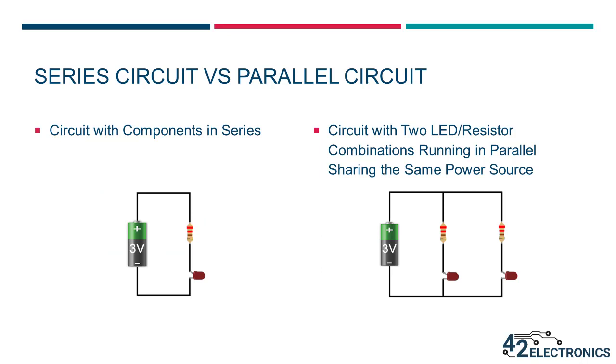But most projects or real-life applications, like that remote control, would run in what's known as a parallel circuit. When running in parallel, the current runs from the positive terminal of the battery, splits along multiple paths to power components, and then runs back to the negative terminal of the battery.